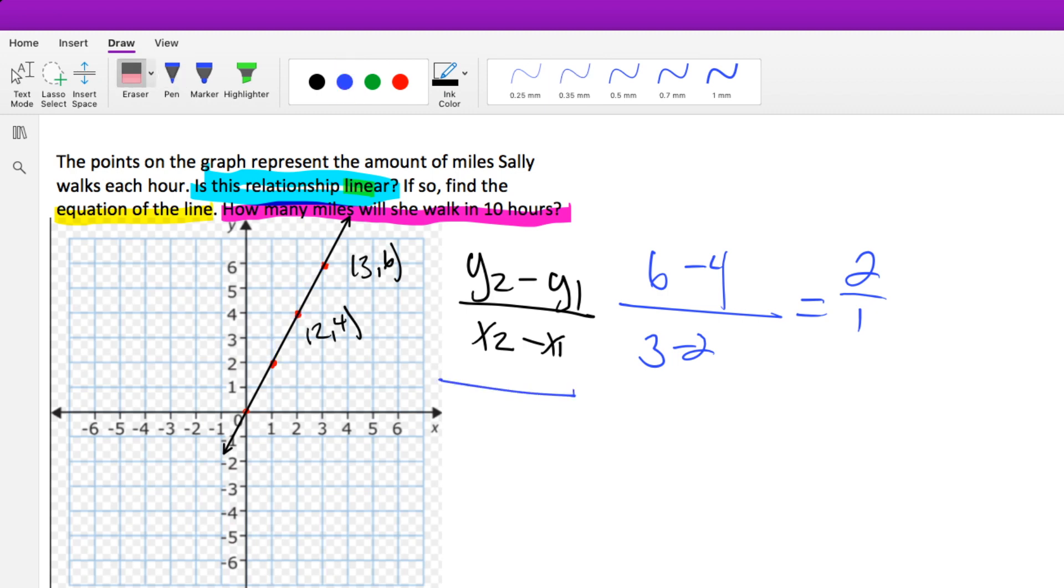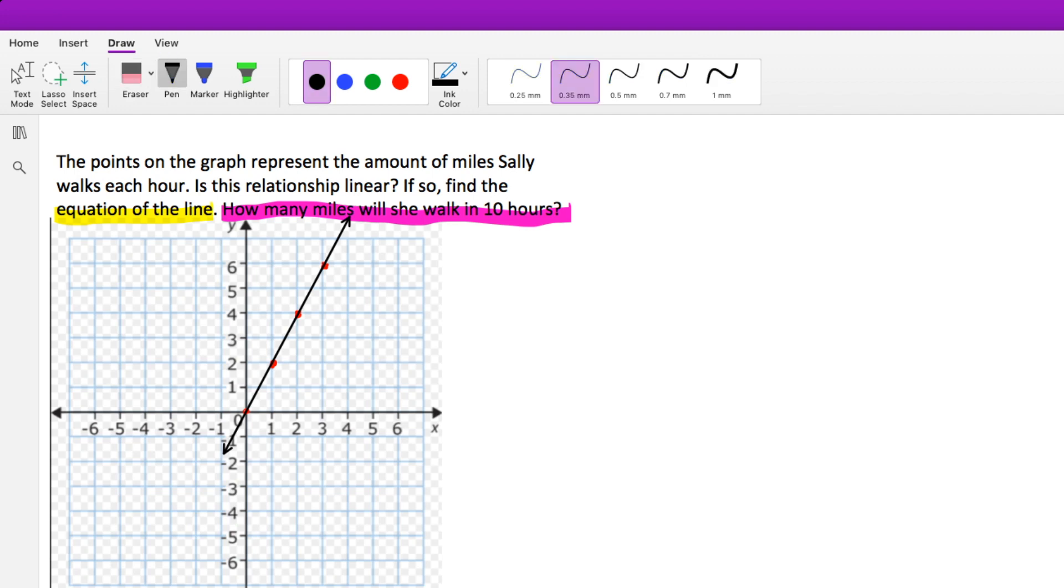So, we have a constant slope. And what do we know now that we know that we have a constant slope? Constant slope means straight line. Straight line means linear. So, the answer to that first question is yes. This is a linear relationship because we have a constant slope. If so, find the equation of the line.